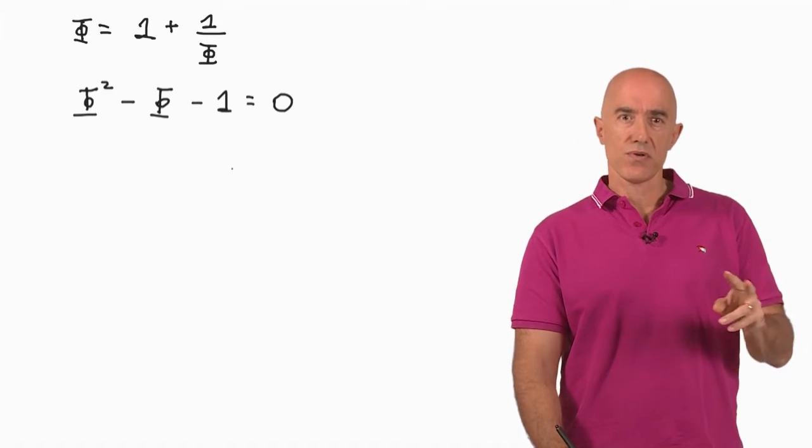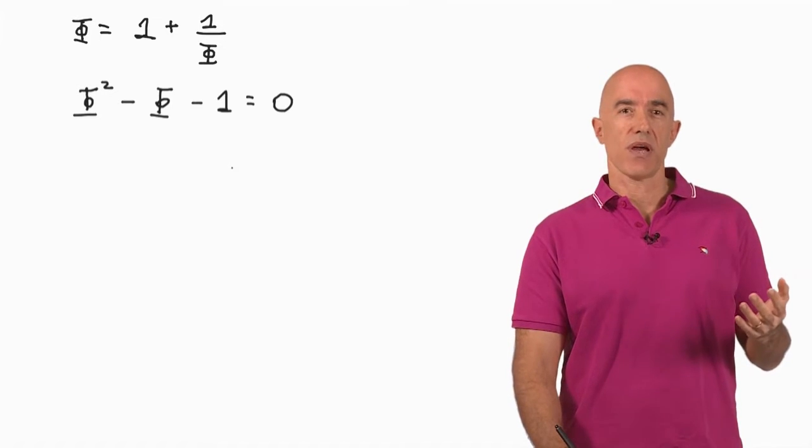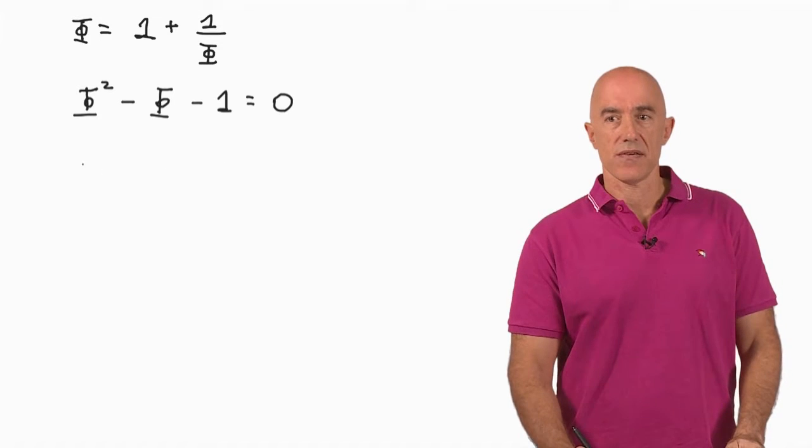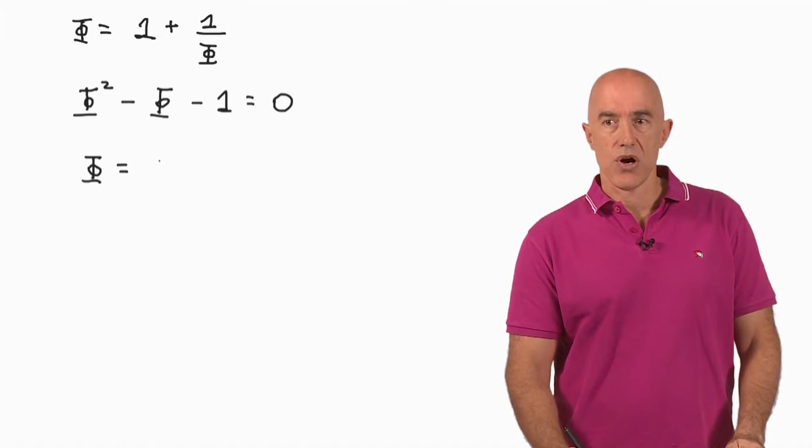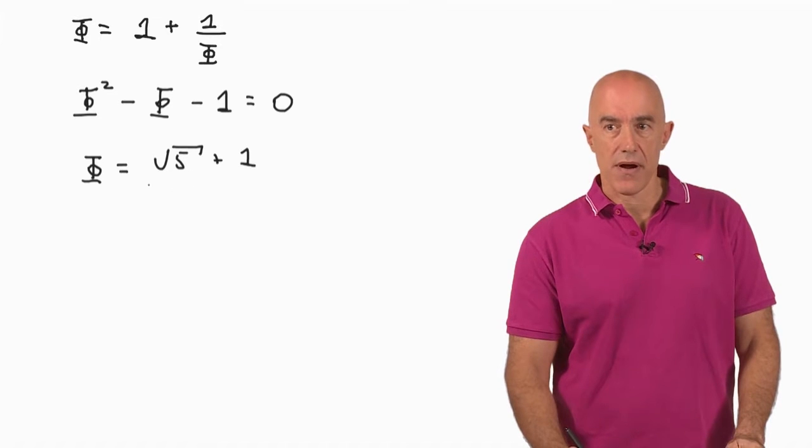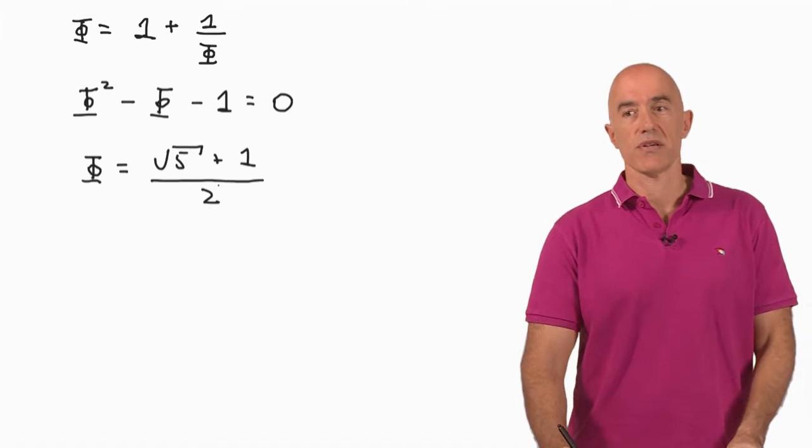There are two roots, but one is negative. And we know that Phi is the ratio of two lengths, so Phi has to be positive. So the positive root, if you just use the quadratic formula, you can show that this is equal to the square root of 5 plus 1 divided by 2. And that's the golden ratio.